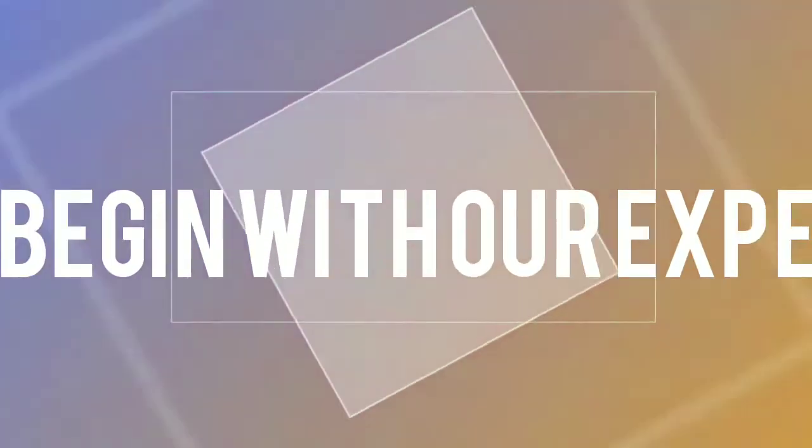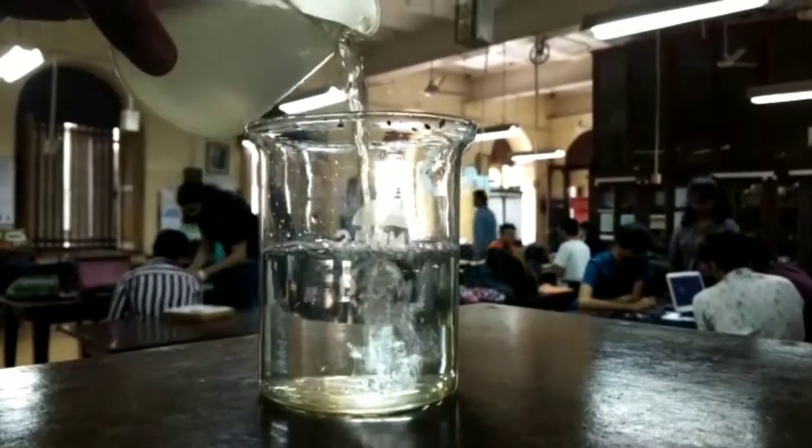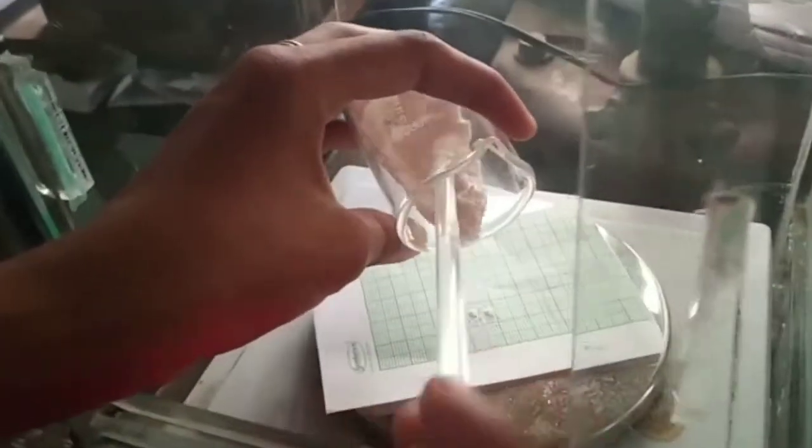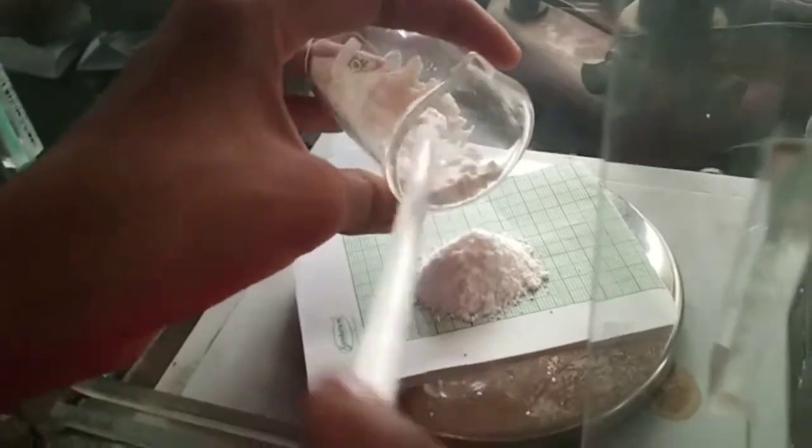So, let's begin with our experiment. Measure 250 ml of water and pour it into a clean beaker. Next, measure the sugar using a digital weighing scale for accurate measure.